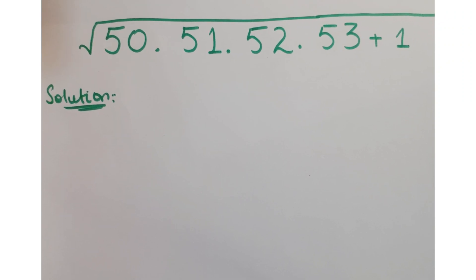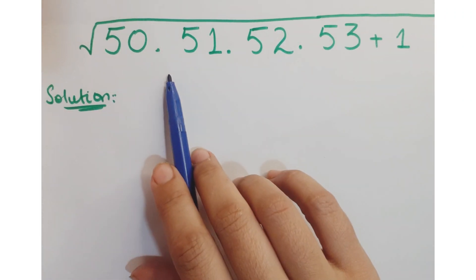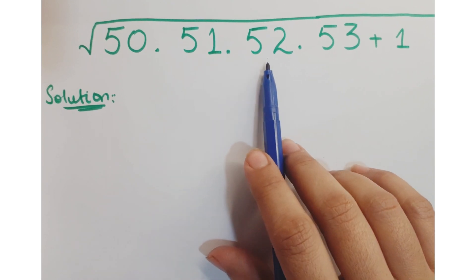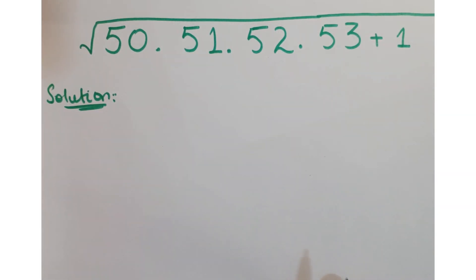Hi guys, look at this question. The question is square root of 50 into 51 into 52 into 53 plus 1, and we have to simplify it.